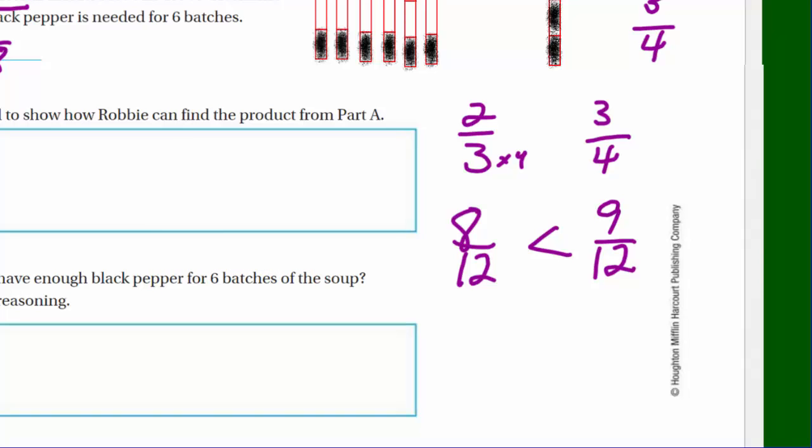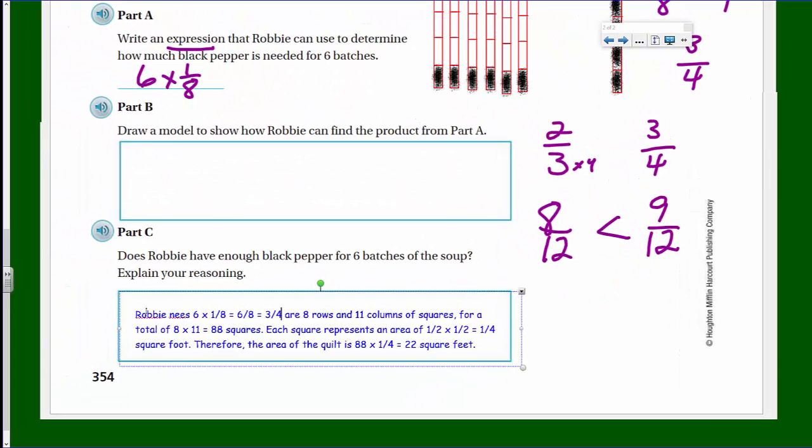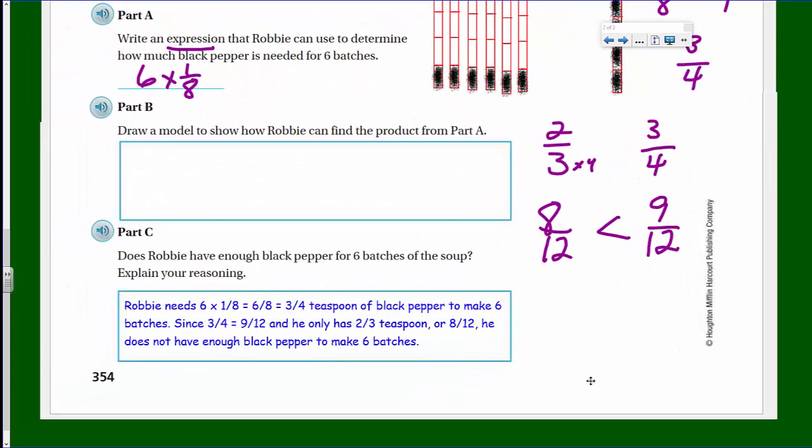Probably more than one way to compare that. We did an extra step. I will go ahead and write my reasoning down like I always do. So like as we talked about, Robbie needs 6 of those 1/8 teaspoons, which we determined to be 6/8, which is the same as 3/4 teaspoon of black pepper, so that he can make the 6 batches. But since 3/4 is equal to 9/12 and he only has 2/3 teaspoons, which is 8/12, he does not have enough black pepper to make 6 batches. In fact, he just needs 1/12 more black pepper.